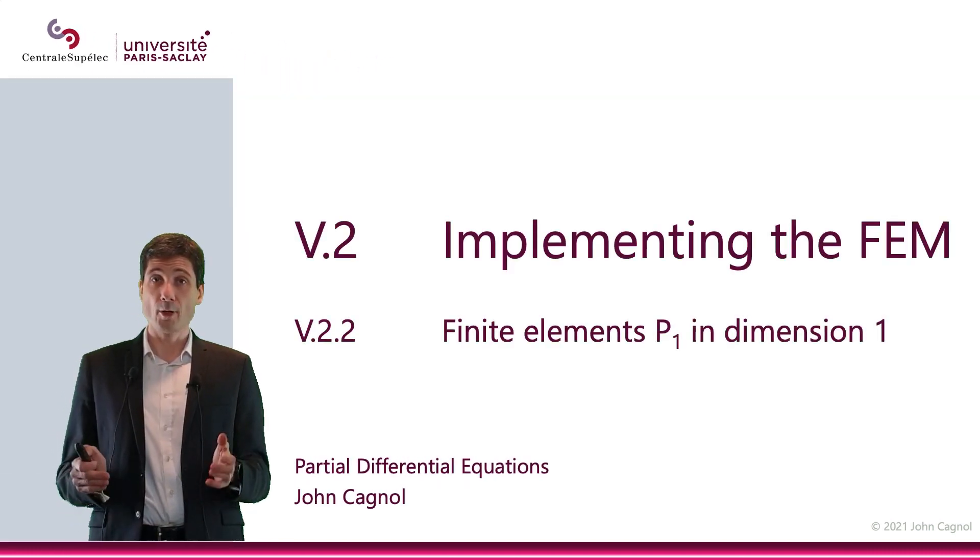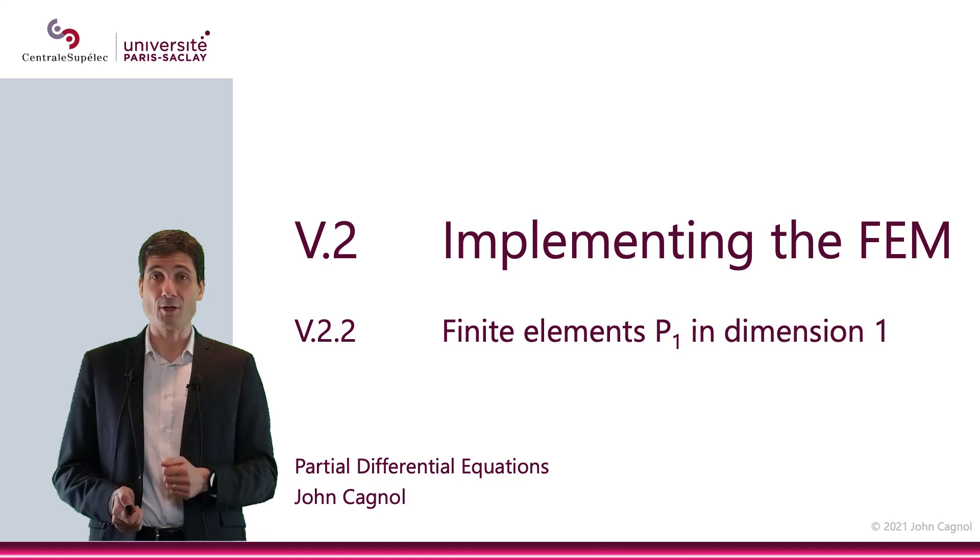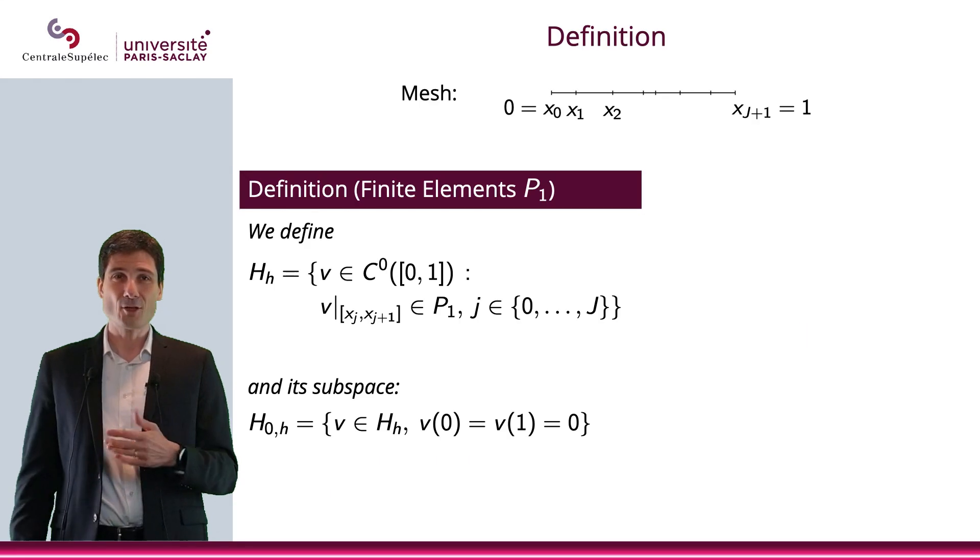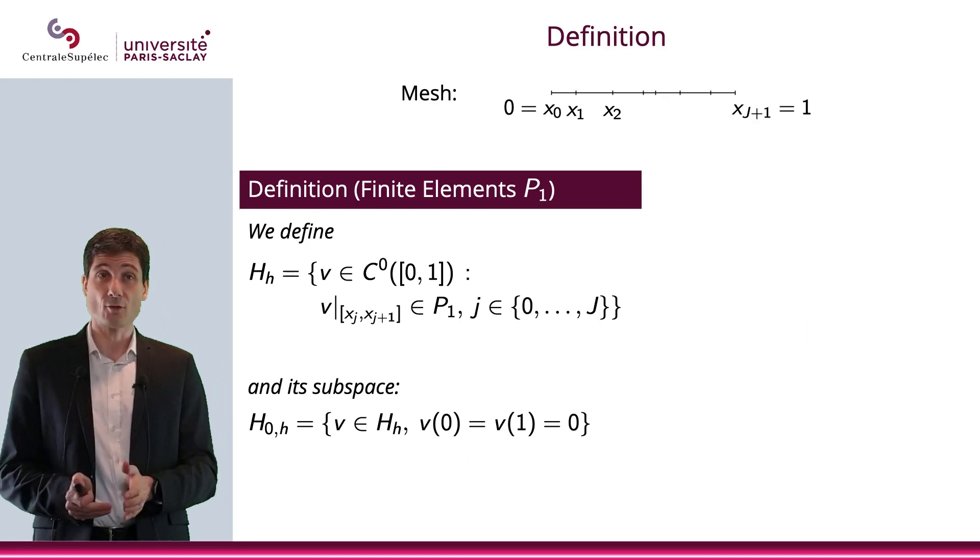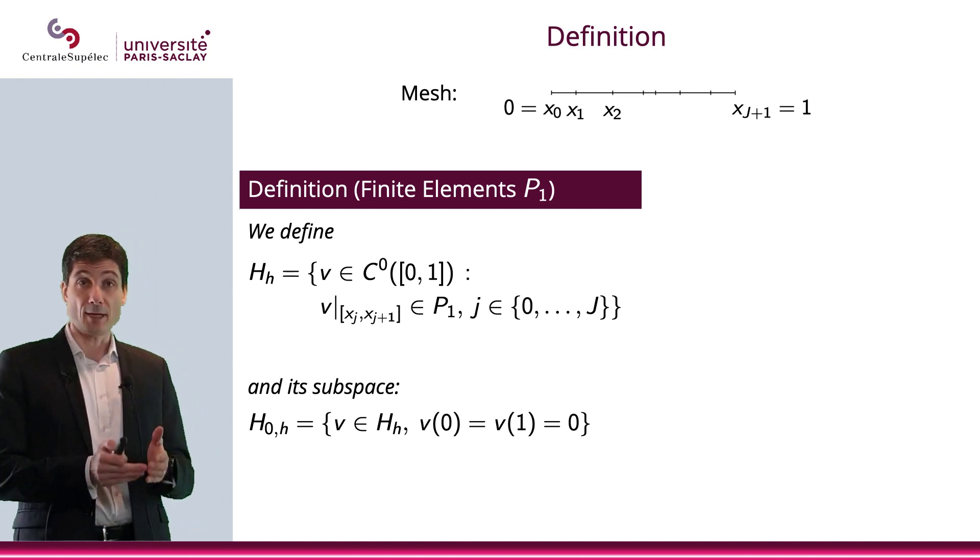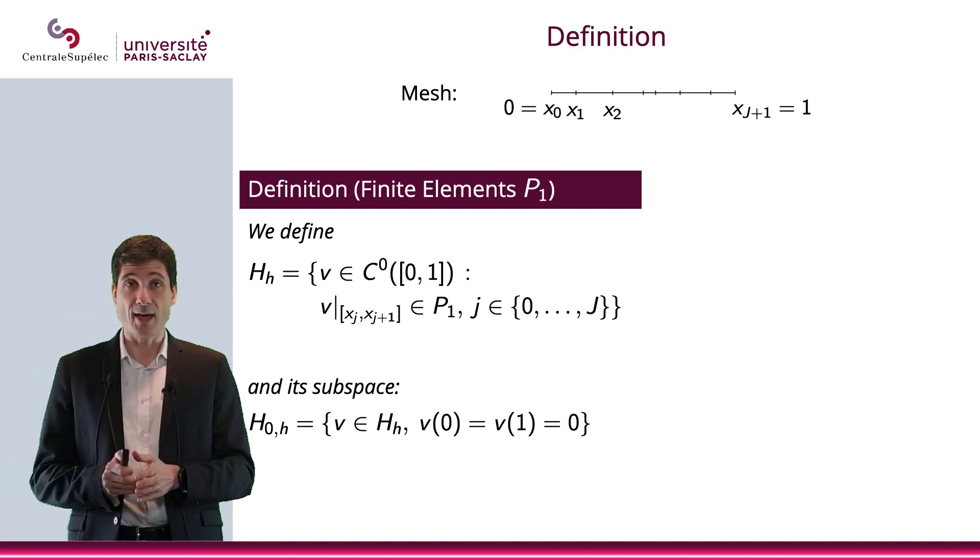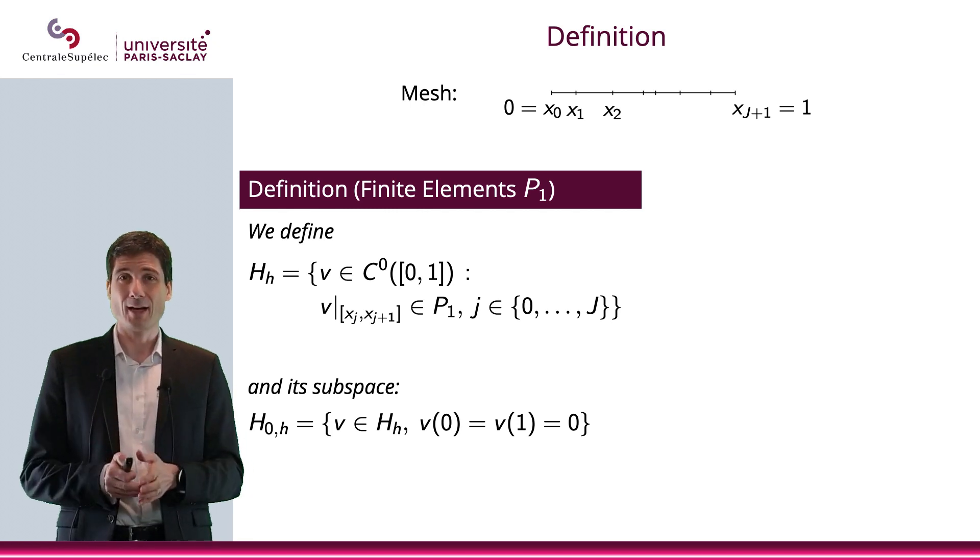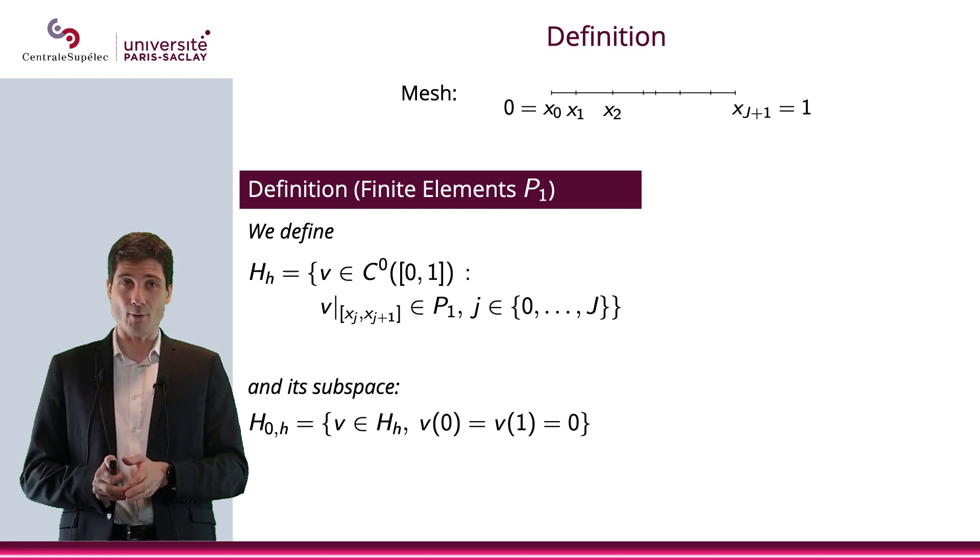In this video, we're going to discuss the finite element method P1 in dimension 1. Let me start with the interval [0,1] and a mesh on this interval. So the mesh will be x_0 to x_{j+1}, therefore we have j+2 nodes and j nodes inside our interval [0,1].